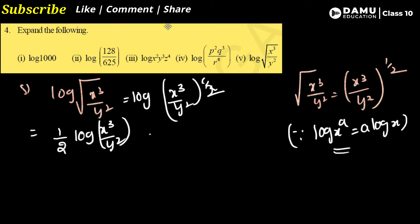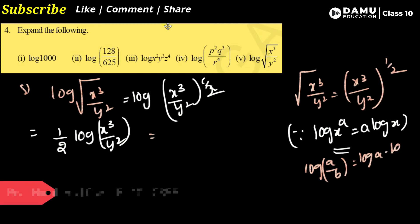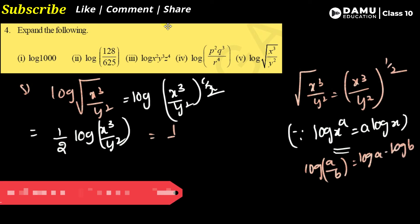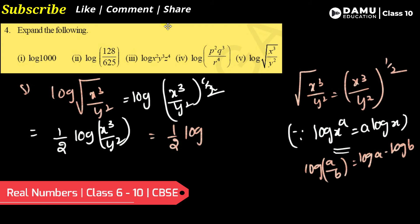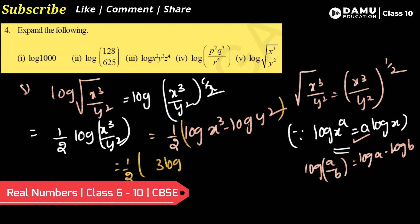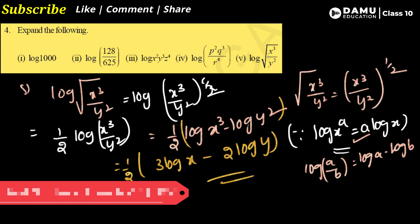Now expand using log(a/b) = log a − log b: (½) × [log(x³) − log(y²)]. Applying the power rule: (½) × [3·log x − 2·log y].